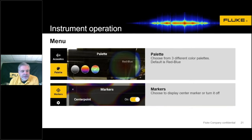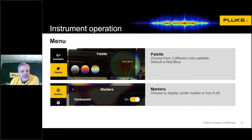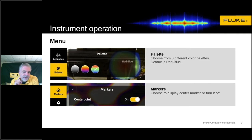The next item on the menu is acoustics and palette. The acoustics menu gives you control over things like the dB scale or the center box. For the palette, the unit comes defaulted with red and blue, but I would caution that if you plan on sharing these images with somebody else, they may be colorblind. The red-blue scale, just like thermal imaging, doesn't necessarily do a good job of communicating differences to colorblind folks. We recommend moving it to one of the monochromatic scales — the gray scale or the iron bow, which is the purpley-yellow one in the middle of that image.